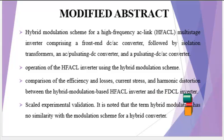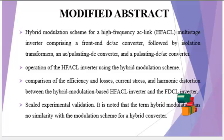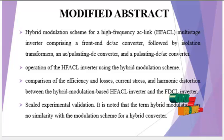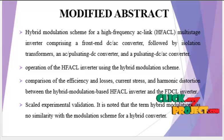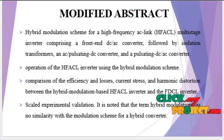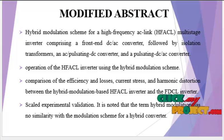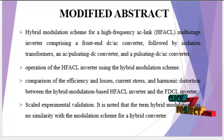Our process covers the Pulsating DC to AC Convertors following the Hybrid Modulation Scheme and the operation of the High Frequency AC Link Invertors using the Hybrid Modulation Scheme. This includes compression of Efficiency, Losses, Current Stress, and Harmonic Distortion between Hybrid Modulation based High Frequency AC Link Invertors and Fixed DC Link Invertors, with experimental validation of the Hybrid Modulation Scheme.